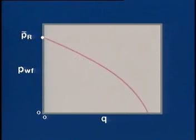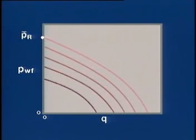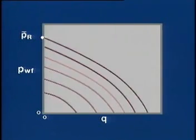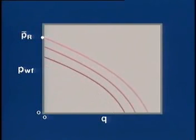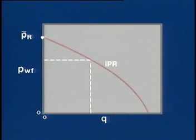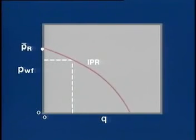Because the reservoir pressure usually decreases as more fluids are produced, the IPR over the life of a well will shrink toward the origin. This family of curves shows how a well's potential to produce at any given bottom hole pressure decreases with declining reservoir pressure. Note that if the flowing bottom hole pressure is held constant as the average reservoir pressure drops, a well's production rate will decrease until it no longer flows.